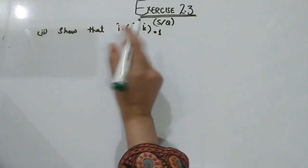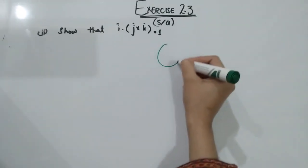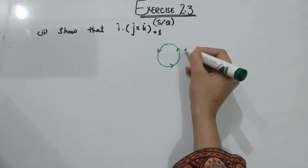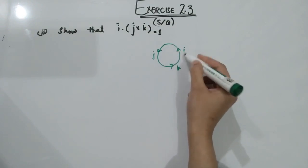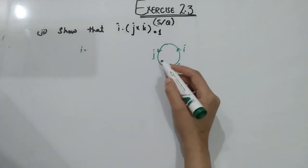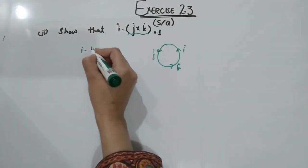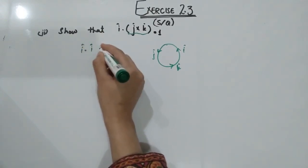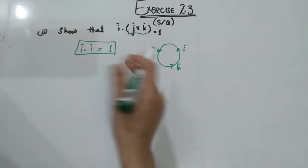In part number two, you have to show that the scalar triple product of the three unit vectors I, J, K equals one. Using the cyclic permutation method — anticlockwise rotation is positive — I cross J is K, K cross I is J, and J cross K is I. So I dot (J cross K) becomes I dot I, and since the self dot product equals one, the result is one.